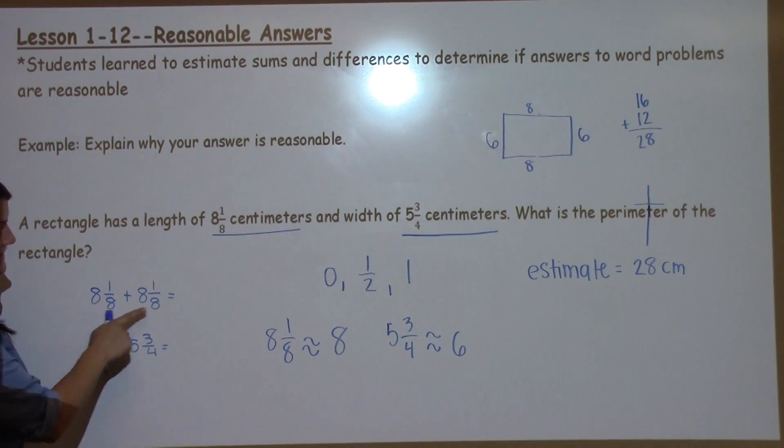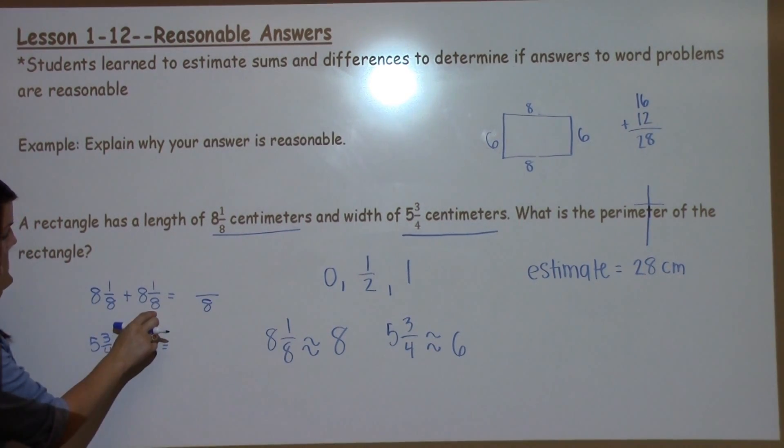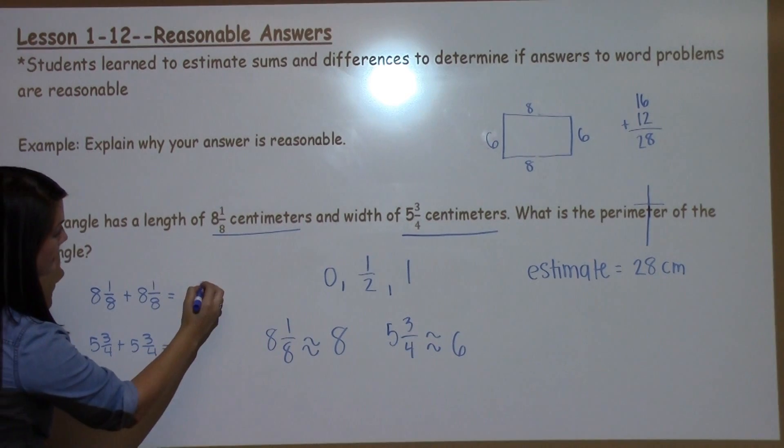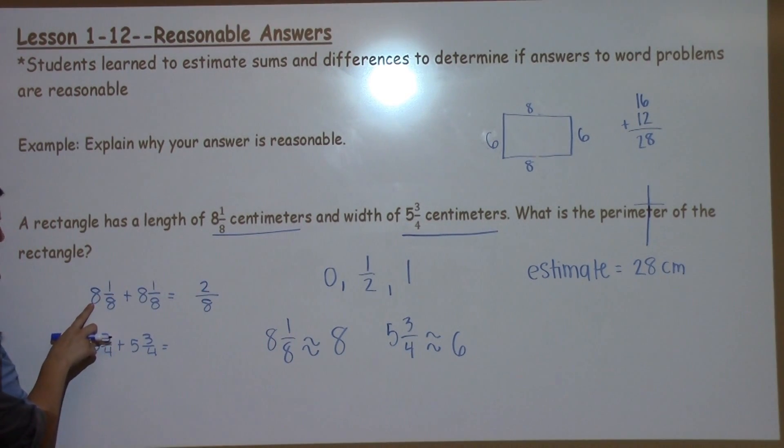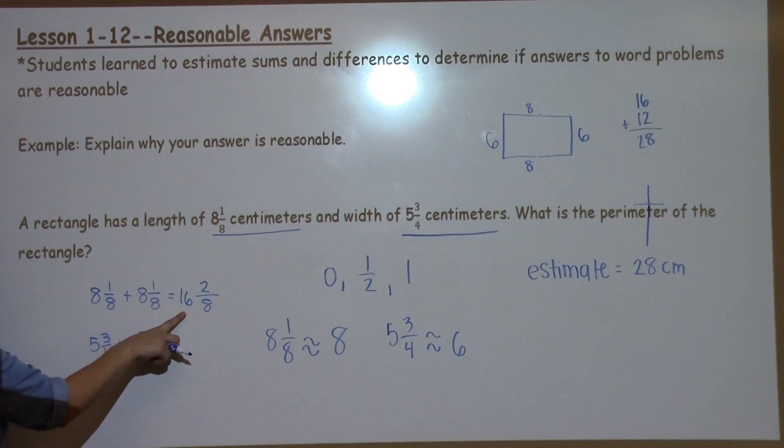The nice thing is my denominators are already the same. So because they're already the same, they get to stay the same. 1 plus 1 is 2, and then I work with my whole numbers. 8 plus 8 is 16. So there's my first total.